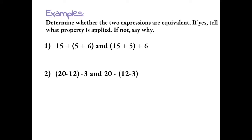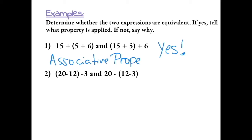Determine whether the two expressions are equivalent. If yes, tell what property is applied. If not, say why. Number 1: 15 plus (5 plus 6) and (15 plus 5) plus 6. These expressions are equivalent because they follow the associative property, which tells us that the order in which numbers are grouped when added or multiplied does not change their value. The parentheses moved from the 5 and 6 to the 15 and 5, but the expressions still have the same value.